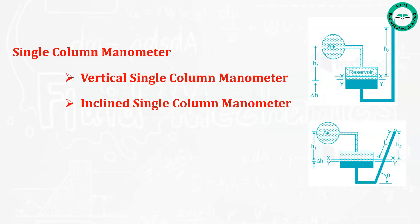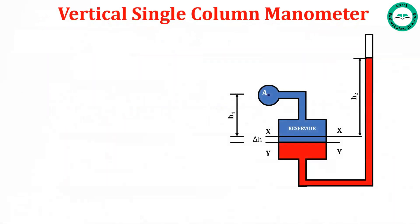Let us first see the vertical single column manometer in detail. The figure shows its construction. It contains a vertical tube which is open to the atmosphere. On the left side there is a large cross-sectional area reservoir, and it is connected to a pipe where we need to find the pressure.